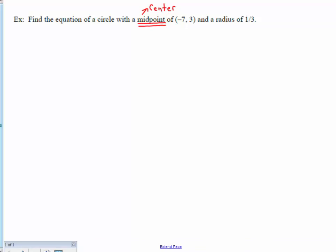For this example, we want to find the equation of the circle with a midpoint of negative 7, 3 and a radius of 1, 3.